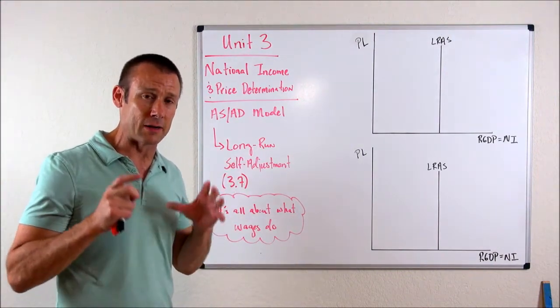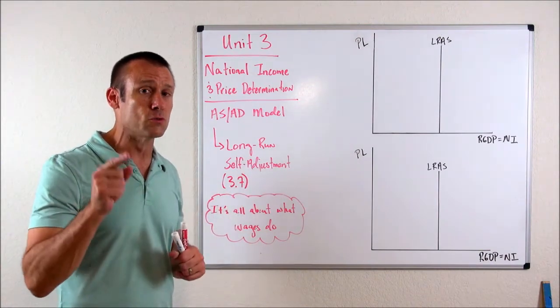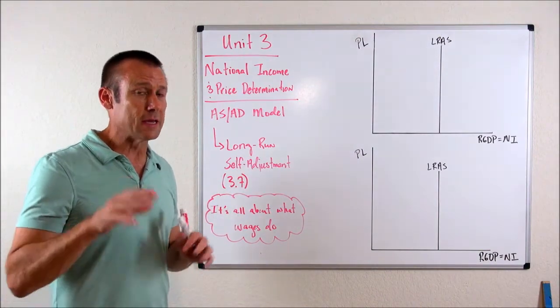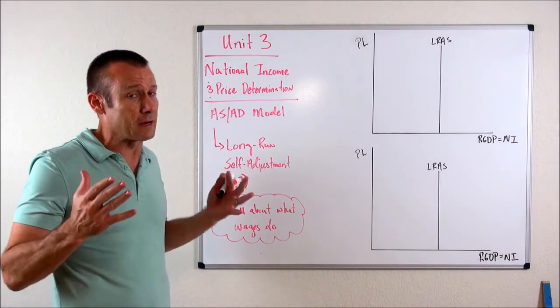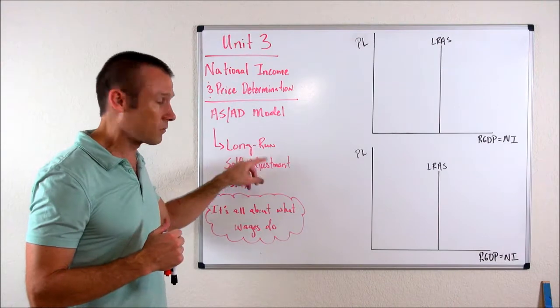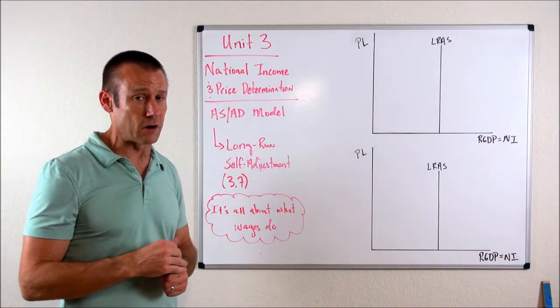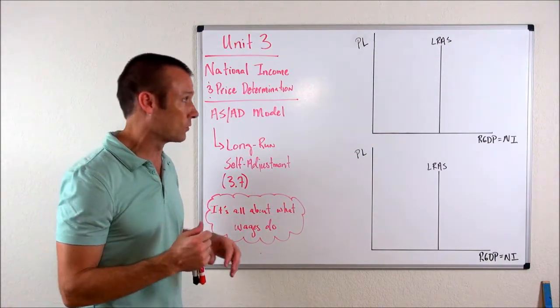So when we talk about adjusting the economy, self-adjusting in the long run, it's all about what wages do. We want to keep our eye on wages, that's going to be the key. And if you watched the earlier video, you know wages shift the SRAS curve, not the AD curve. So that's kind of letting you know something right from the beginning. That self-adjustment in the long run, what's going to happen is the curve that's going to shift to bring us back to the long run is going to be the SRAS.